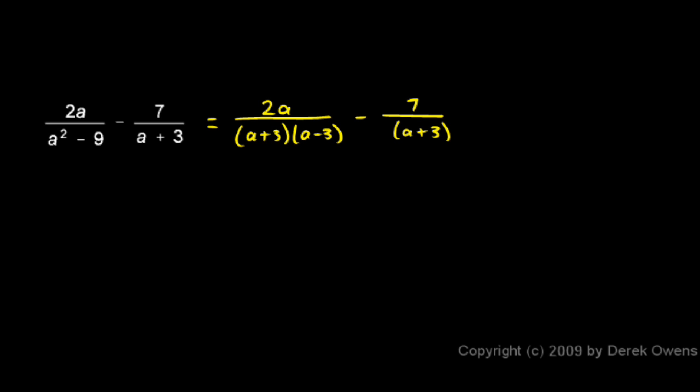So I've just rewritten the original problem but with this part a squared minus 9 factored as a plus 3 times a minus 3. Now I see this a plus 3 here and here.